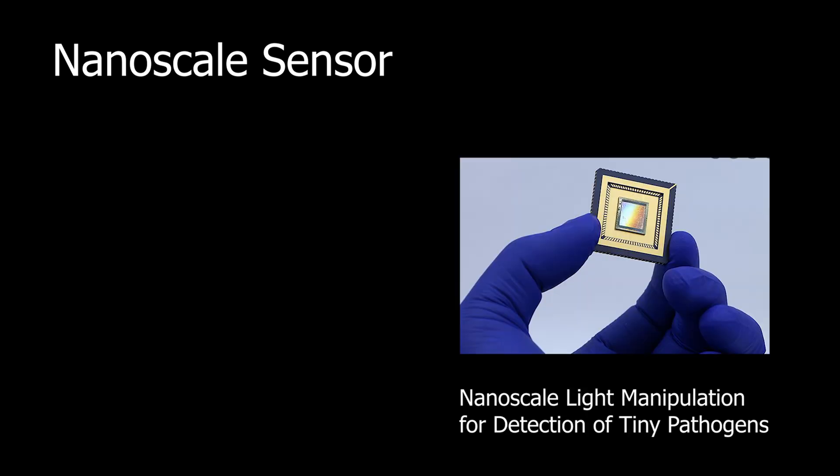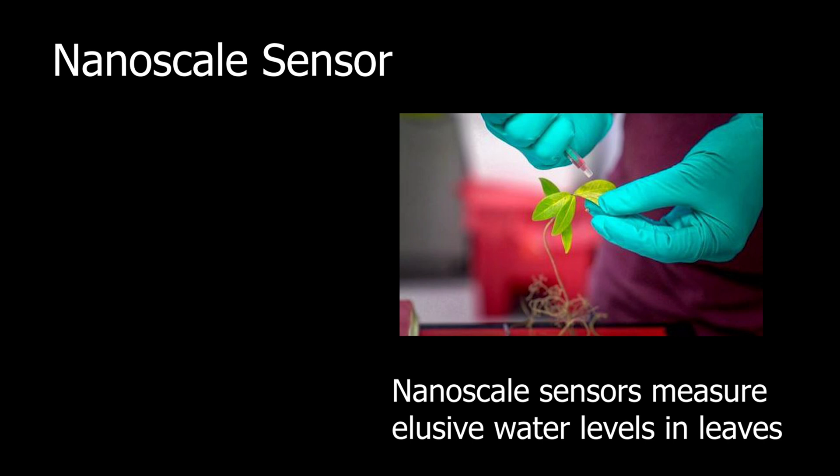Nanosensors are nanoscale devices that measure physical quantities and convert these to signals that can be detected and analyzed. There are several ways proposed today to make nanosensors. These include top-down lithography, bottom-up assembly, and molecular self-assembly. There are different types of nanosensors in the market and in development for various applications.